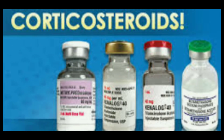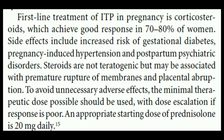The first-line treatment of ITP in pregnancy is corticosteroids, which achieves a good response in 70 to 80% of women. Side effects include increased risk of gestational diabetes mellitus (GDM) and pregnancy-induced hypertension (PIH). Postpartum psychiatric disorders can also occur as a result of corticosteroids. Although corticosteroids are not teratogenic, they may be associated with premature rupture of membranes and placental abruption. To avoid unnecessary adverse effects, the minimal therapeutic dose possible should be used, with dose escalation if the response is poor.